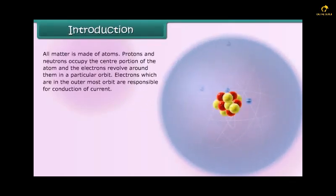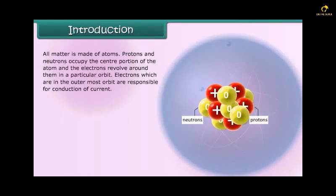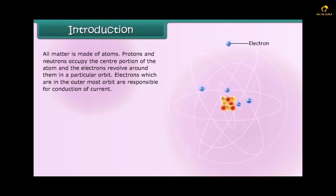Introduction: All matter is made of atoms. Protons and neutrons occupy the center portion of the atom and the electrons revolve around them in a particular orbit. Electrons which are in the outermost orbit are responsible for conduction of current.